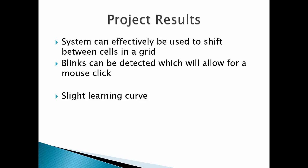So the results of the project were fairly promising. The system was shown that it can effectively be used to shift between cells in a grid. In our case the grid was 3 by 5 but in reality you could increase that grid to whatever size you want. Once the correct LED is illuminated you can blink twice to detect a click. The final thing I want to mention is that there is a slight learning curve to using this system. Moving your eye solely left or only right without moving it up or down is something that takes getting used to.